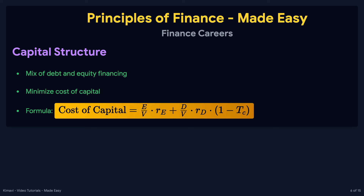Capital structure refers to the mix of debt and equity financing used by a company. The goal is to find the optimal balance that minimizes the cost of capital. The cost of capital is calculated using the formula: cost of capital equals the market value of equity divided by the total market value of equity and debt, multiplied by the cost of equity, plus the market value of debt divided by the total market value of equity and debt, multiplied by the cost of debt, multiplied by one minus the corporate tax rate. Here, E represents the market value of equity, V is the total market value of equity and debt, R sub E is the cost of equity, D is the market value of debt, R sub D is the cost of debt, and T sub C is the corporate tax rate.